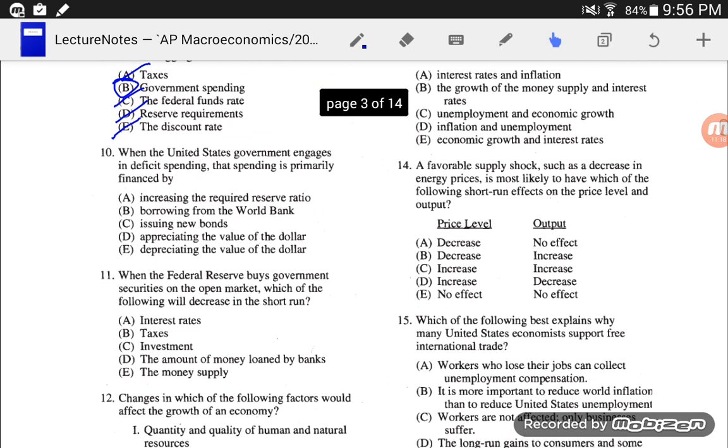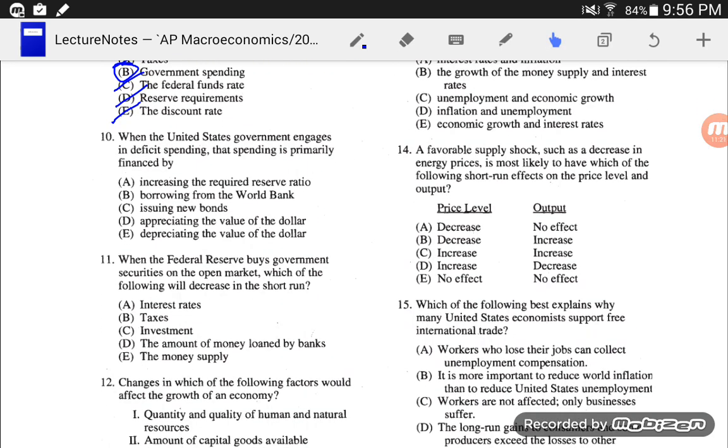Number 10, when the United States government engages in deficit spending, that spending is primarily financed... How do they do that? Well, if you remember from class, I drew those wonderful IOU notes. Those IOU notes are bonds. So, yeah, when they need to borrow money, they issue bonds. They don't change the reserve requirement. They don't borrow from the World Bank. They don't change the value of the dollar. They issue bonds.